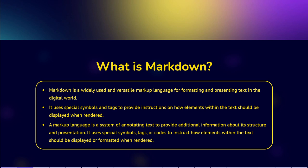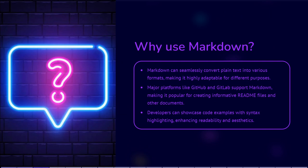The true beauty of Markdown lies in its ability to seamlessly convert plain text into various formats. Platforms like GitHub and GitLab natively support Markdown, making it the go-to format for creating informative and visually appealing readme files and other documents. The ability to embed code snippets with syntax highlighting enables developers to showcase their code examples in a way that is both readable and aesthetically pleasing.